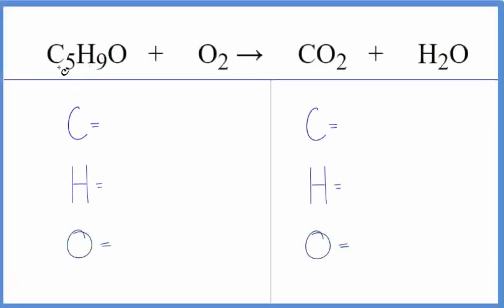To balance this equation we have C5H9O plus O2. Let's count the atoms up and then balance it. Five carbons, nine hydrogens, and one oxygen plus these two in the O2, don't forget those three. Product side: one carbon, two hydrogens, and then two plus one, so we have three oxygen atoms.